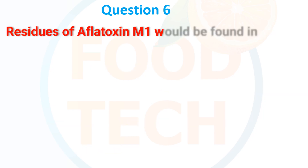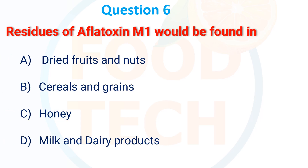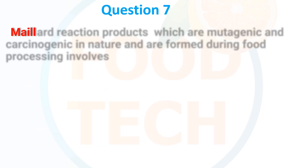Residual of alpha-doxinium would be found in: A. Dry fruit and nuts, B. Cereal and grains, C. Honey, D. Milk and dairy products. The correct answer is milk and dairy products.